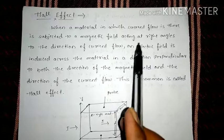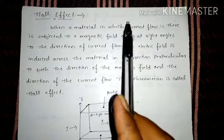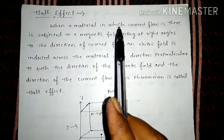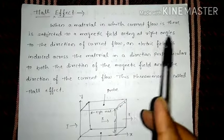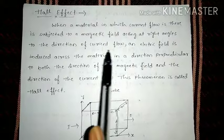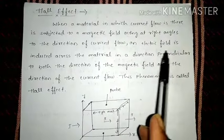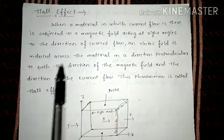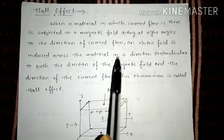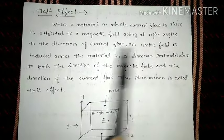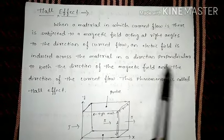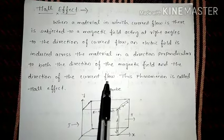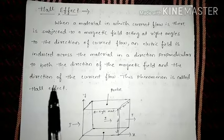...to the direction of current flow, an electric field is induced across the material in a direction perpendicular to both the direction of the magnetic field and the direction of current flow. This phenomenon is called Hall effect.